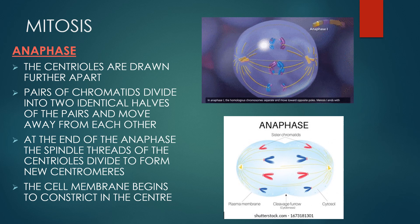Anaphase is the stage of mitosis after the process of metaphase. When replicated, chromosomes are split and the newly copied chromosomes, the daughter chromatids, are moved to opposite poles of the cell. Pairs of chromatids divide into two identical halves and move away from each other. At the end of anaphase, the spindle threads of the centrioles divide to form new centromeres. The cell membrane begins to constrict in the center.